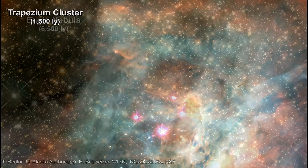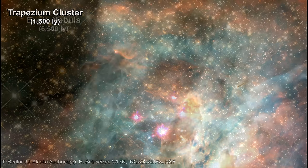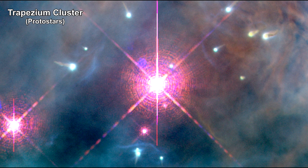Here we see the trapezian cluster of four stars at the heart of the Orion Nebula. If we zoom in, we can see several protostars around one of the larger stars. They are the white object streaming material away from the central star.